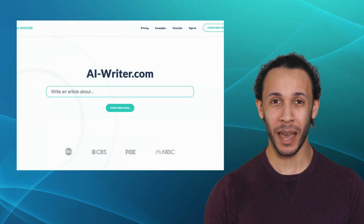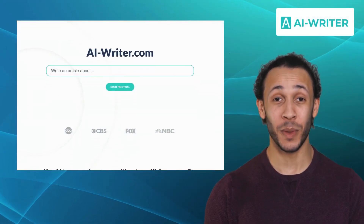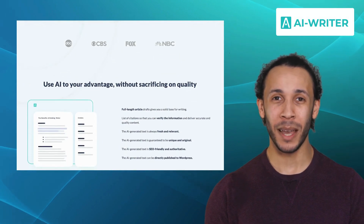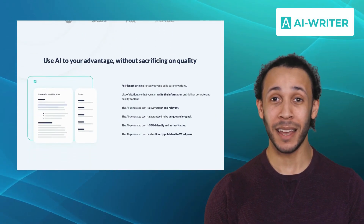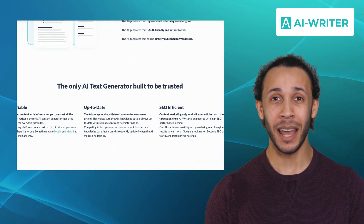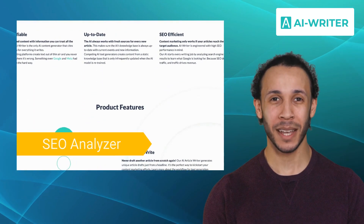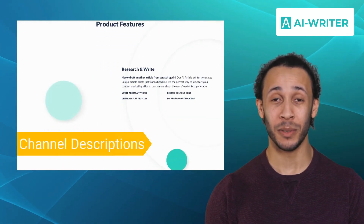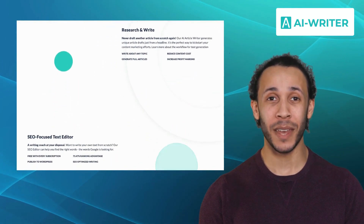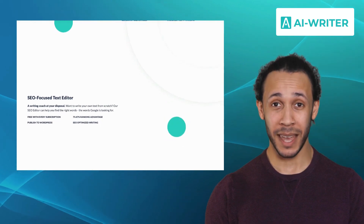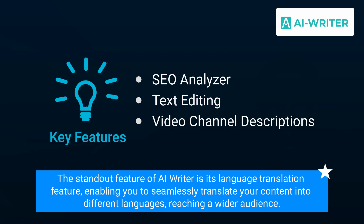Last but not least, we have AI Writer. AI Writer is an AI writing tool that aims to simplify the content creation process and offers various writing modes to cater to different needs. It offers features like SEO Analyzer, text editing, and video channel descriptions. Its intuitive interface and easy-to-use features make content creation a breeze. The standout feature of AI Writer is its language translation feature, enabling you to seamlessly translate your content into different languages, reaching a wider audience.